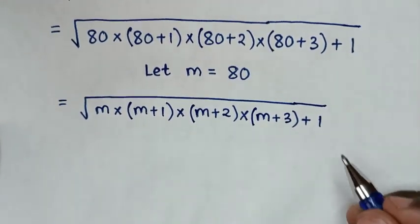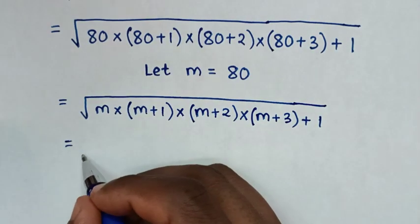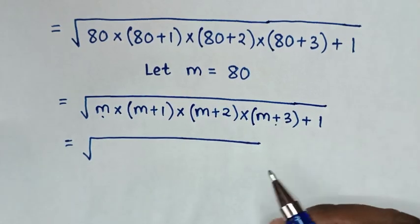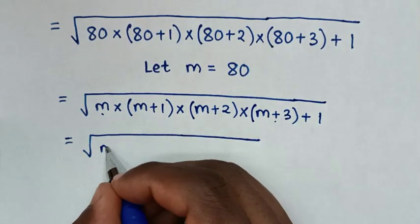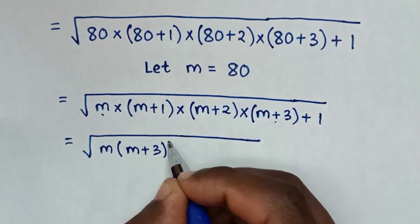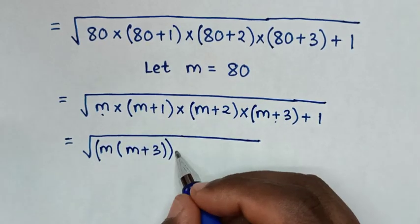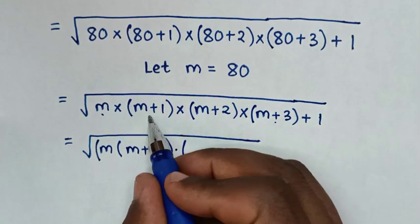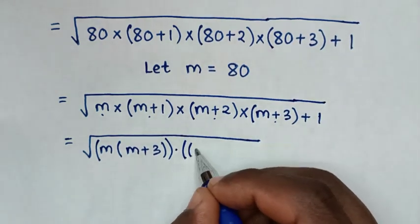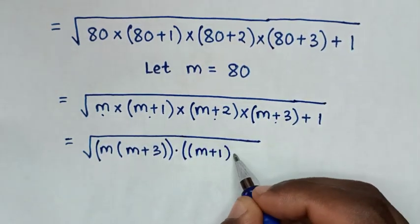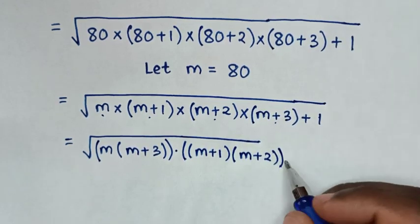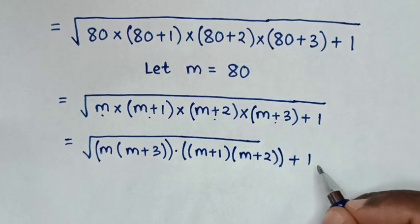In the next step, it will be equal to the square root of m(m+3) times (m+1)(m+2), then plus 1.